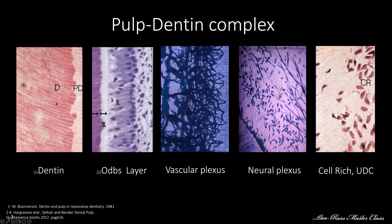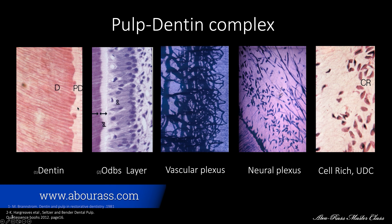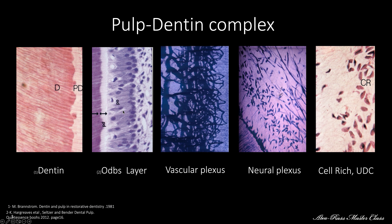We come from the dentin. We come to the pre-dentin zone before the pulp immediately. And then we face the odontoblastic layer — very rich, highly specialized cells. Immediately after that, we see a very rich vascular plexus, to be followed by the neural plexus.